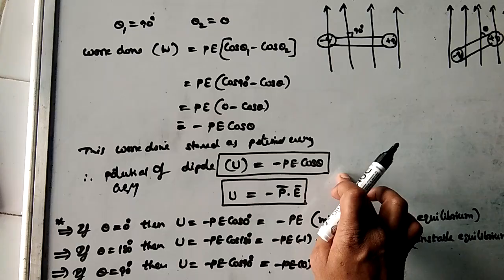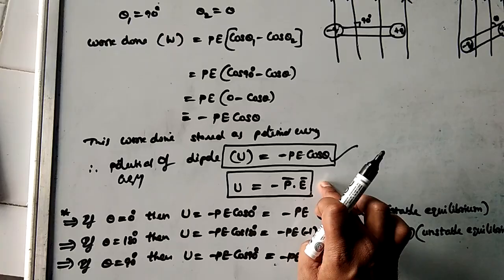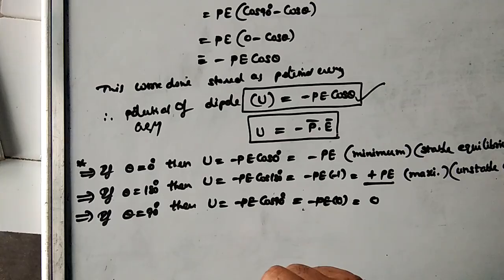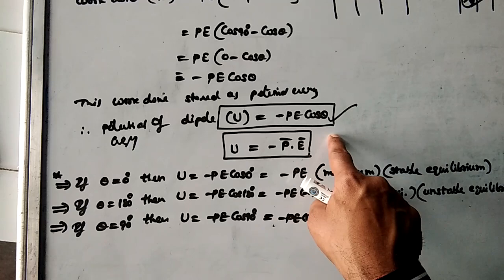Remember, this is a very useful formula. Here the cosine function is present — PE and E are both vectors, so it is just like a dot product, as I explained dot product in 11th class. Now if theta is equal to 0 degrees, that means the dipole is in the direction of the field. Substituting theta = 0 in the formula, cos 0 = 1, so you get minus PE.